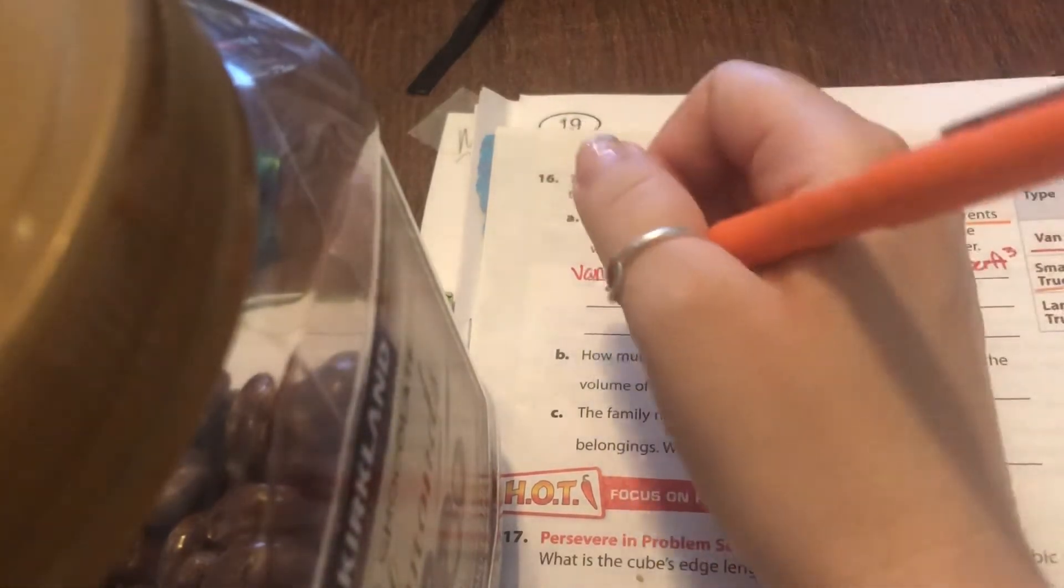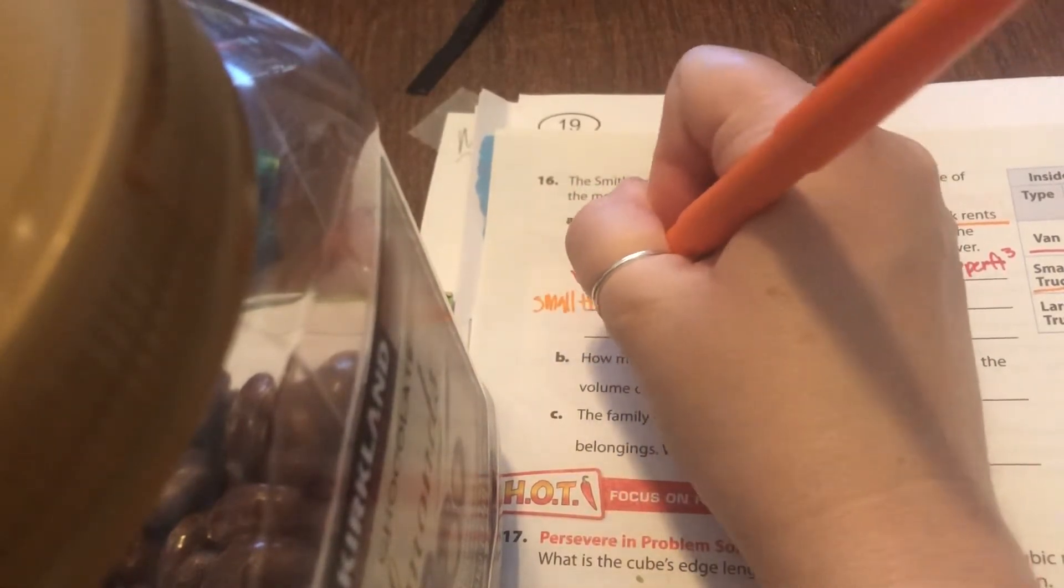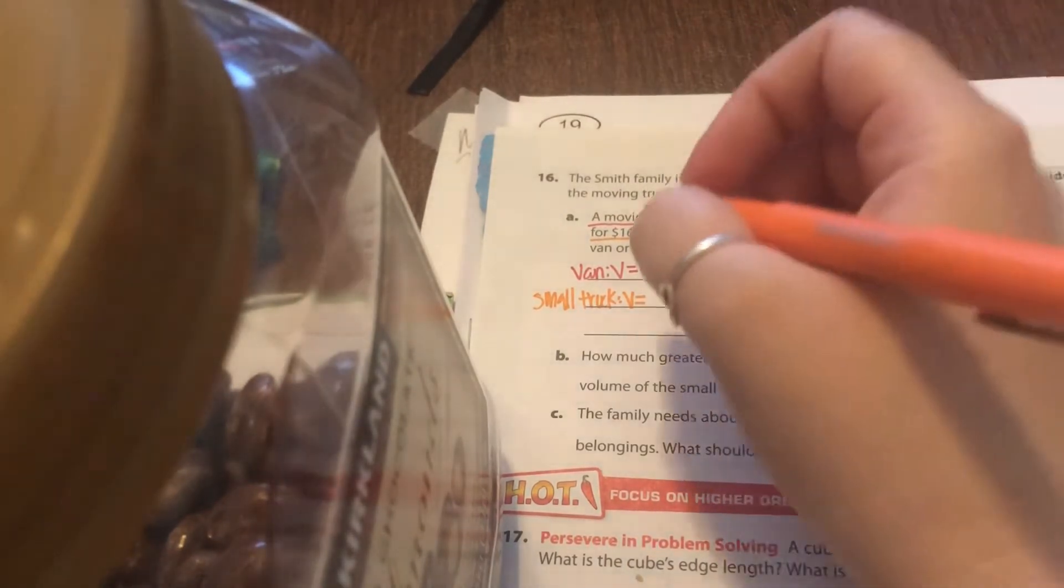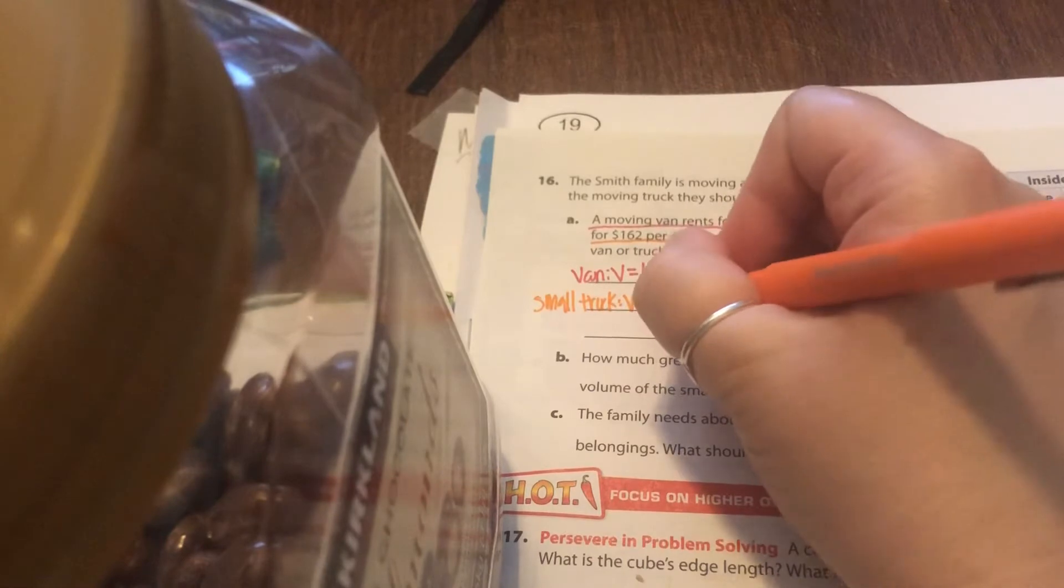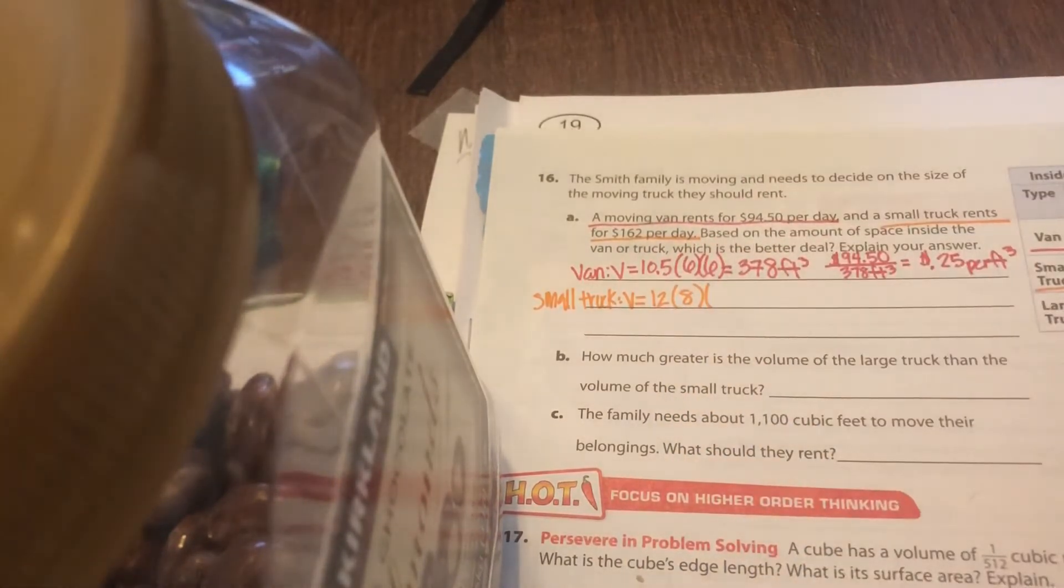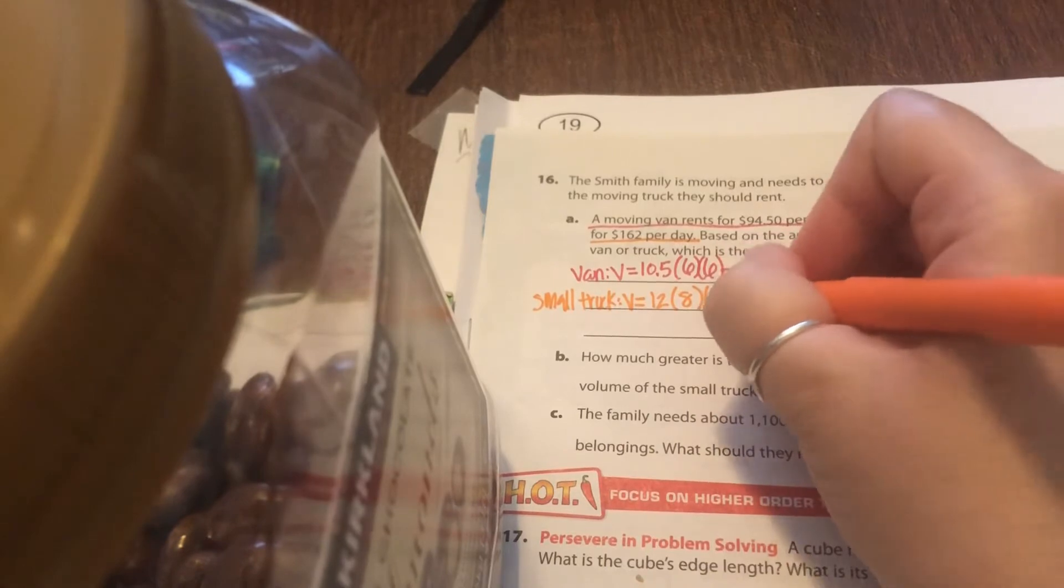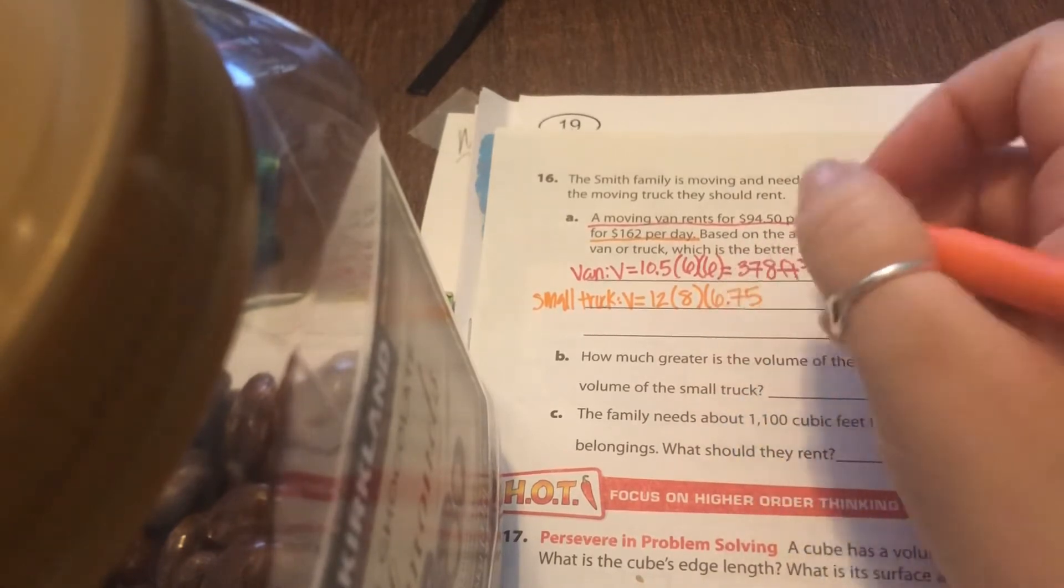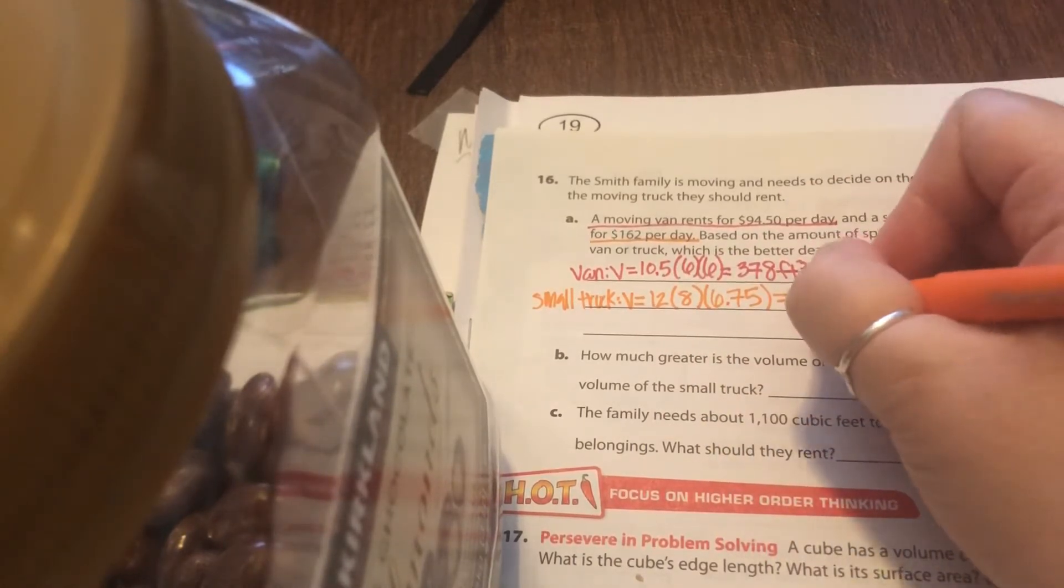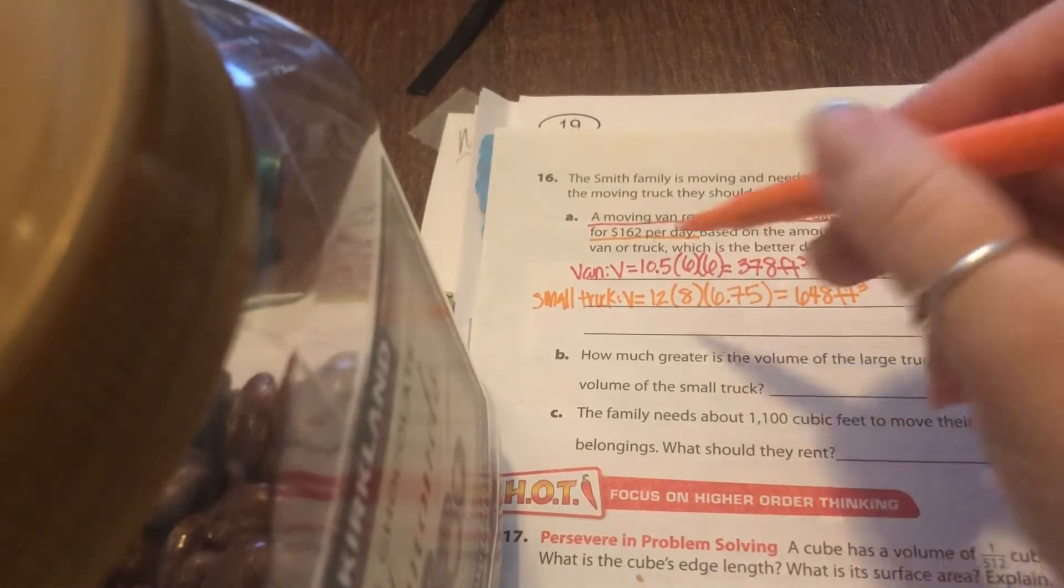All right, now I'm going to do the same thing for the small truck. Well, the small truck volume is 12 by 8 by 6 and 3 fourths. So you have 12 times 8 times 6 and 3 fourths. 6 and 3 fourths is the same as 6.75 because 3 divided by 4 is 0.75. Go ahead and type all that into your calculator, and you get 648 cubic feet. So that's the volume of the small truck.